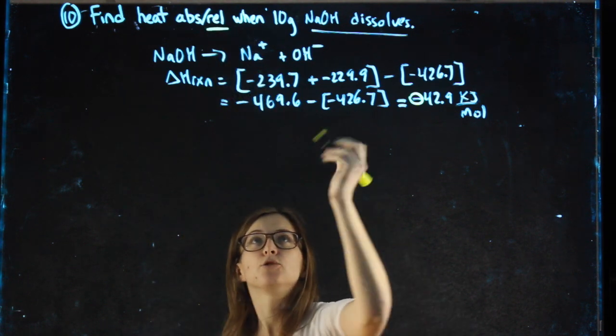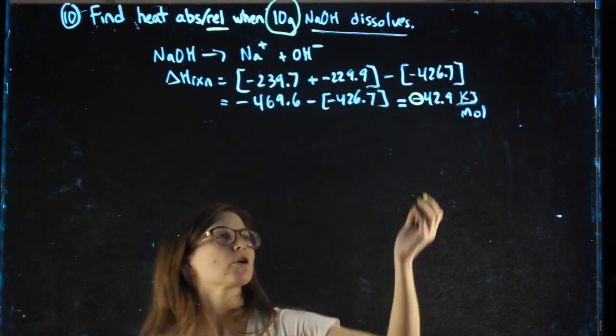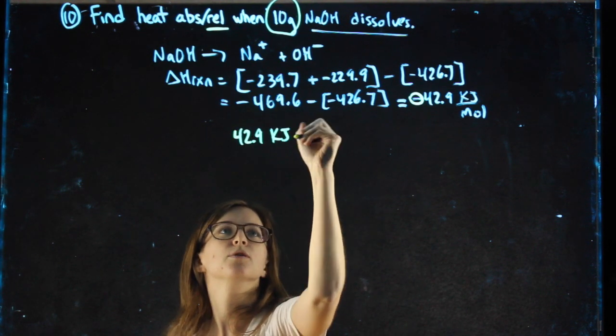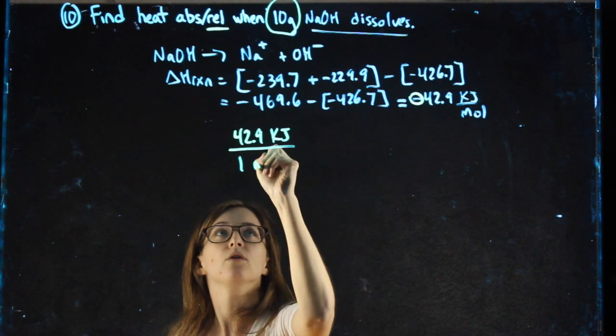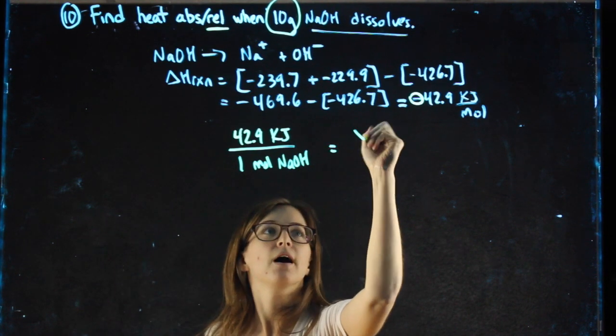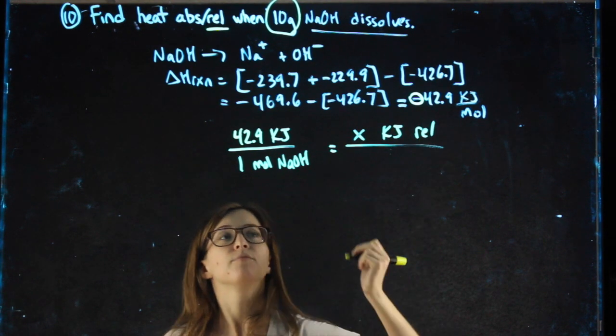And I can go into a proportion using my grams of NaOH. 42.9 kilojoules will be for 1 mole of NaOH because it has a coefficient of 1. I want to find the heat released for a different number of moles.